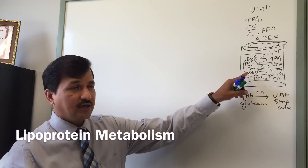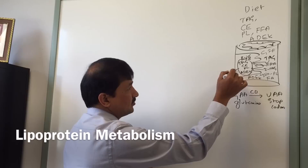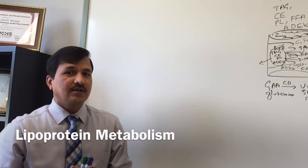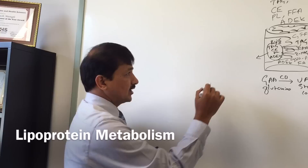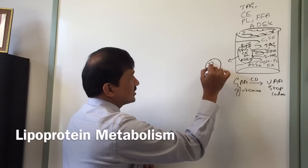In the intestine, the enzyme cytidine deaminase converts the codon CAA (coding for glutamine) to UAA, a stop codon. This stops translation at 48 percent of the ApoB100 mRNA, producing ApoB48. ApoB48 is then loaded with triacylglycerol, cholesterol ester, phospholipid, and vitamins A, D, E, and K to form the chylomicron. Because chylomicron is a large molecule, it cannot be secreted directly into blood vessels; it is initially secreted into lymphatics and then enters the bloodstream.